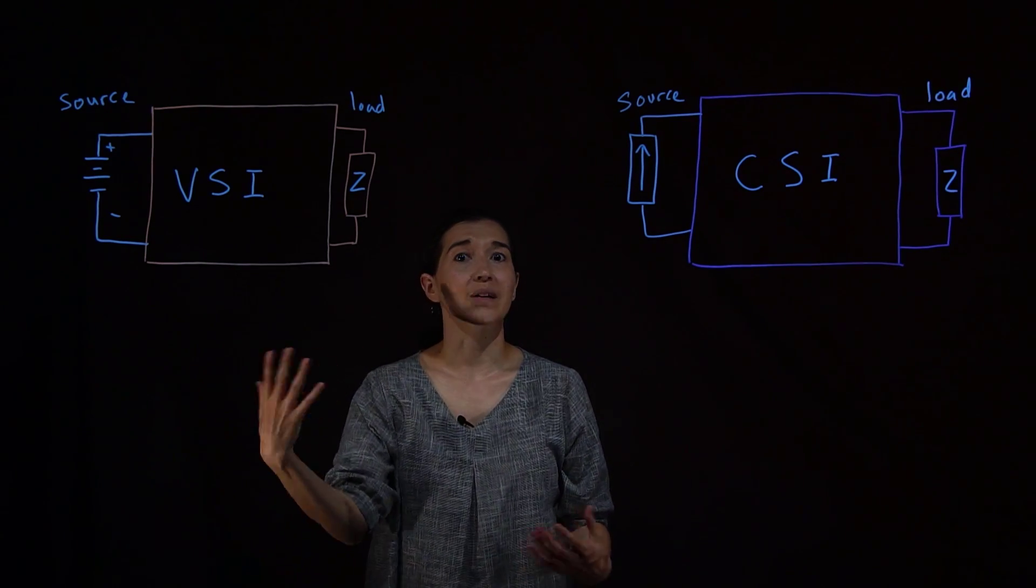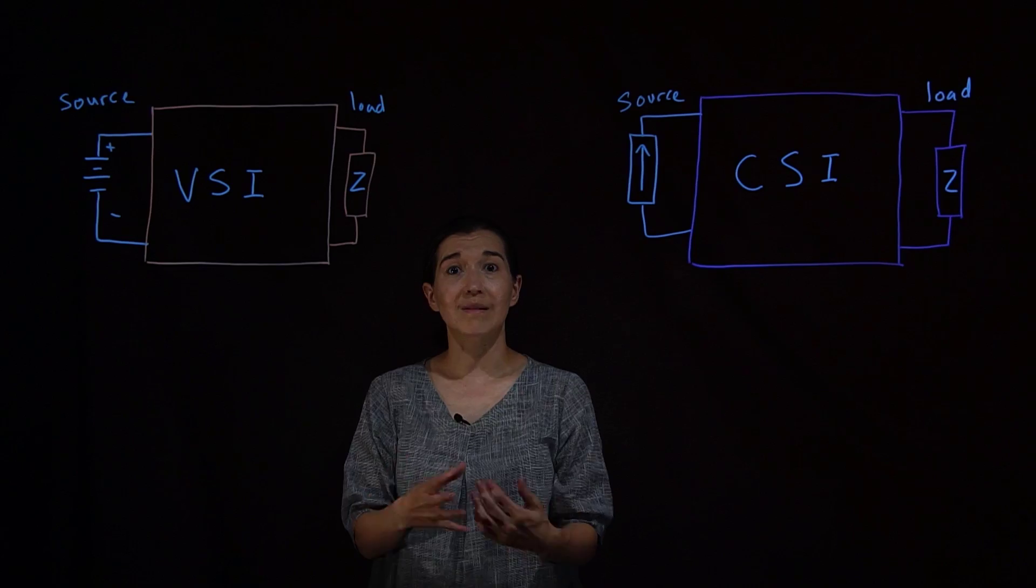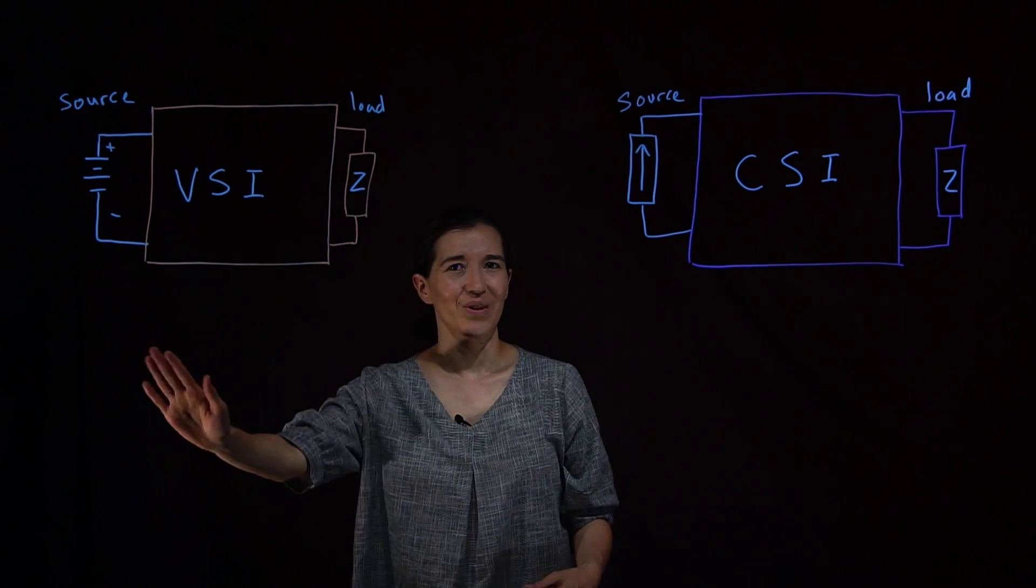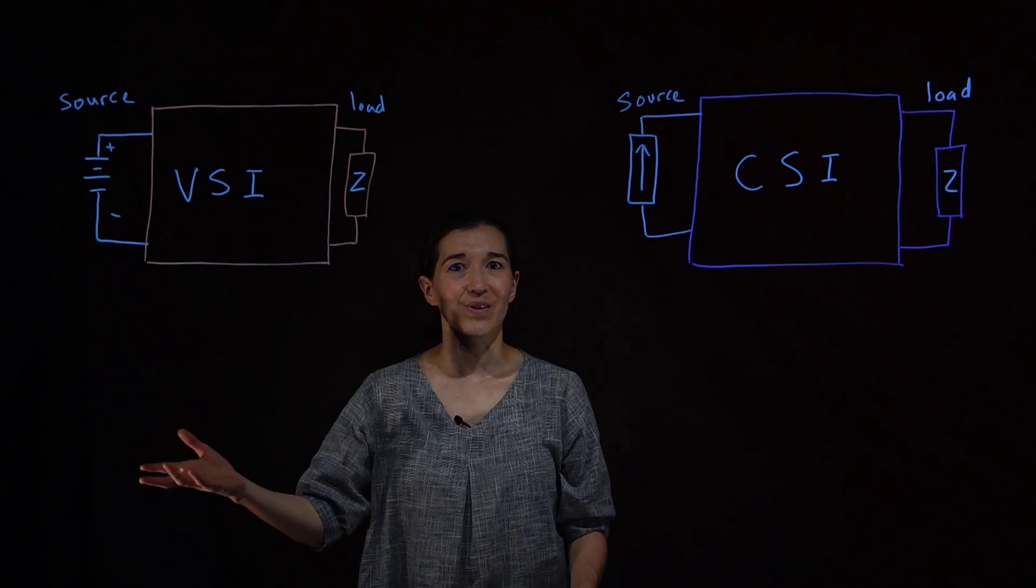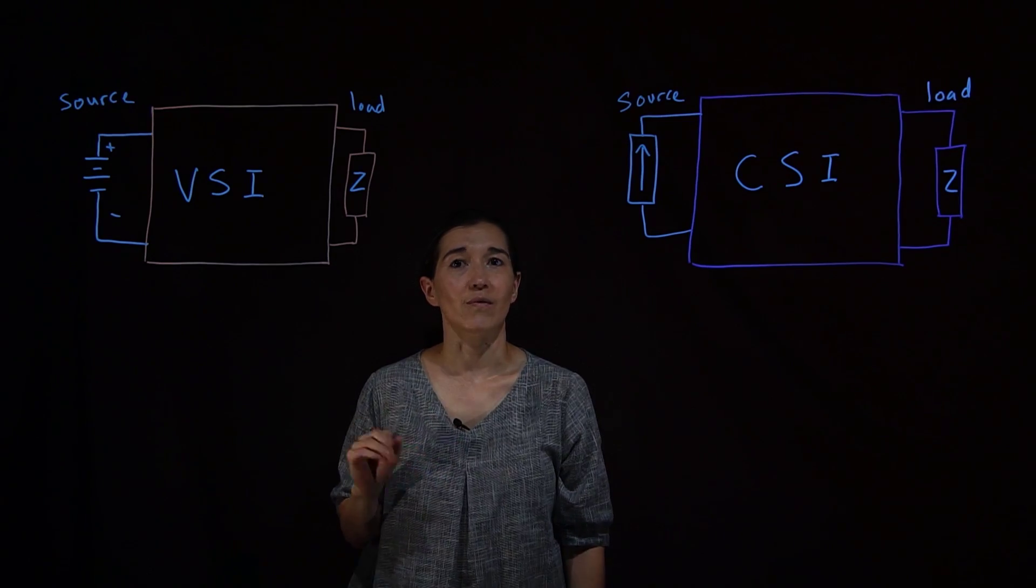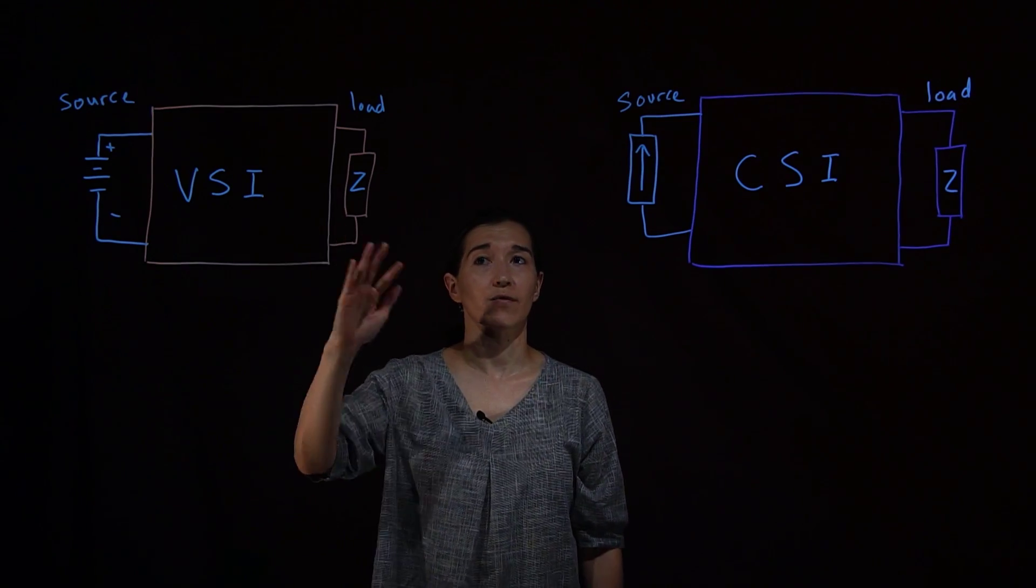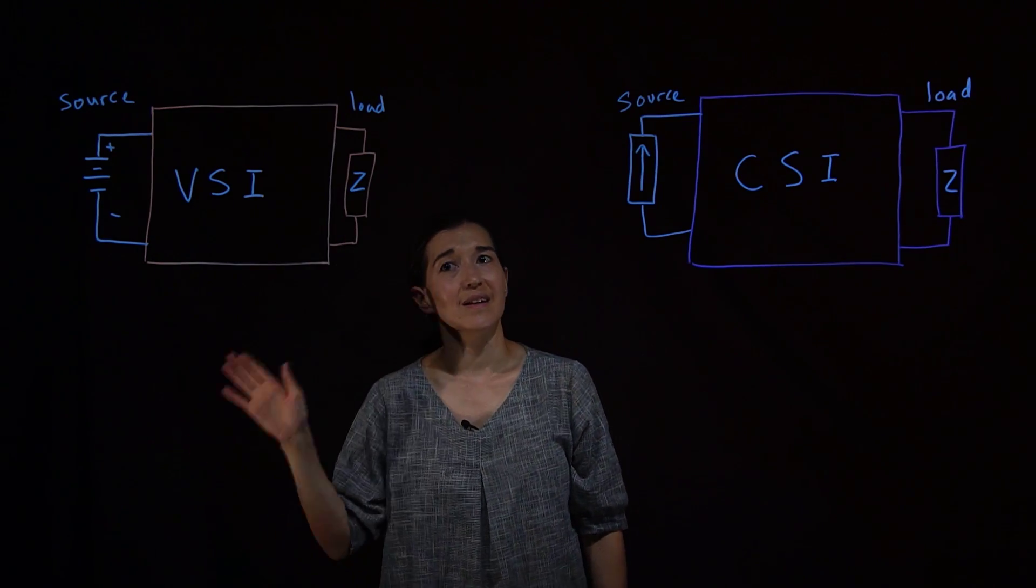Within the converter there's a bunch of different topologies that you could use, but we're just saying when the source is a voltage source then we can use a voltage source inverter to transform the DC to AC.